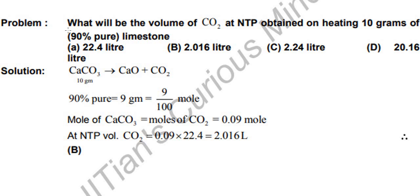Let's solve this problem. What will be the volume of CO₂ at NTP obtained on heating 10 grams of 90% pure limestone? Limestone is nothing but CaCO₃. Calcium carbonate gives calcium oxide plus CO₂, so we have to find the volume of CO₂ produced.